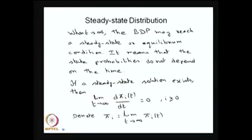The steady state distribution arises when, as t tends to infinity, the birth-death process reaches equilibrium, meaning the state probabilities do not depend on time. Since the state probabilities do not depend on time t, the derivative of the time-dependent state probability as t tends to infinity becomes 0, if the steady state solution exists. Since the state probabilities are independent of time as t tends to infinity, I can write pi_i as the limit of pi_i(t) as t tends to infinity.